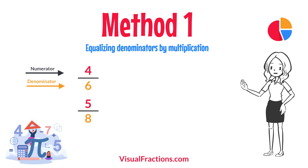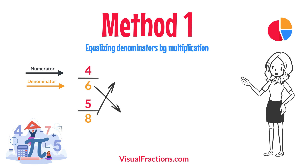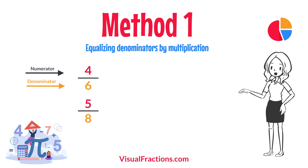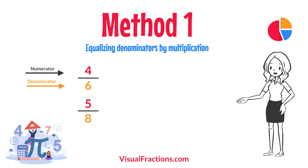First, let's equalize the denominators by multiplying each fraction's numerator and denominator by the other fraction's denominator. This method works by using the denominators of each fraction to create a common denominator, allowing us to compare the fractions directly.